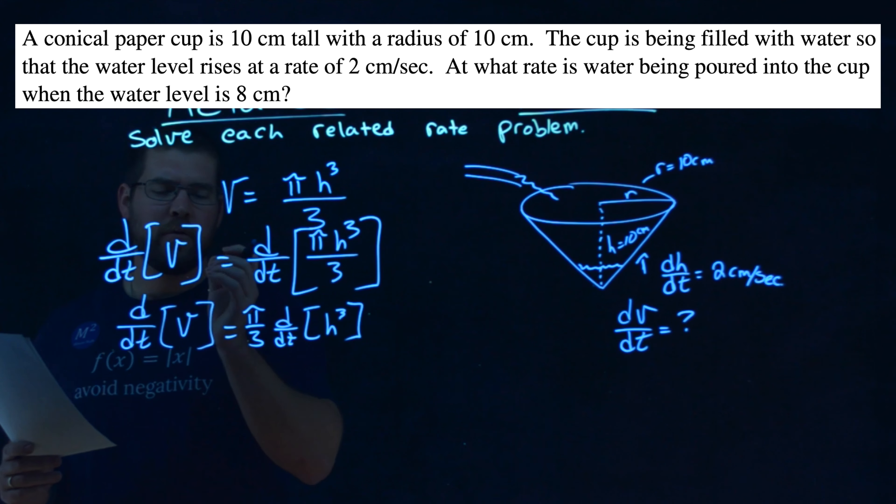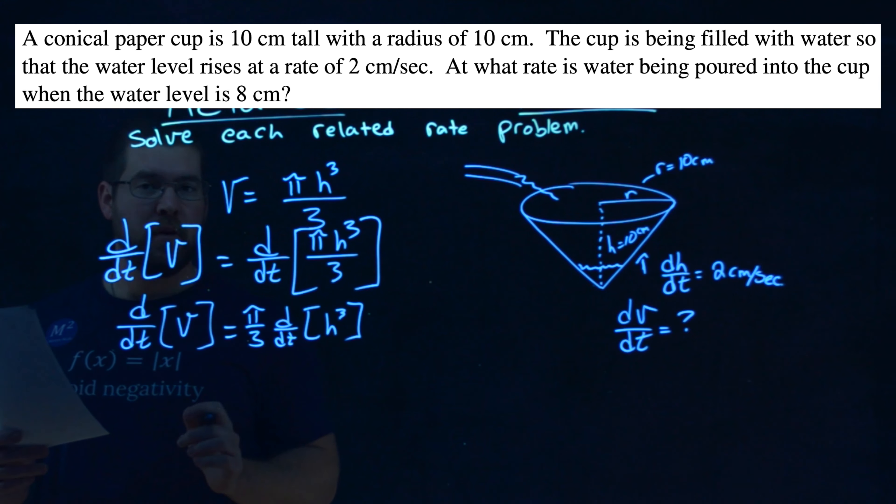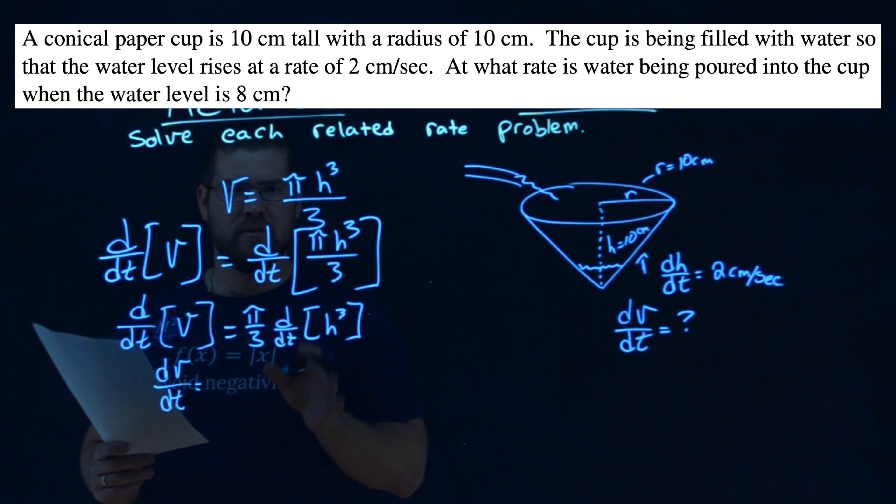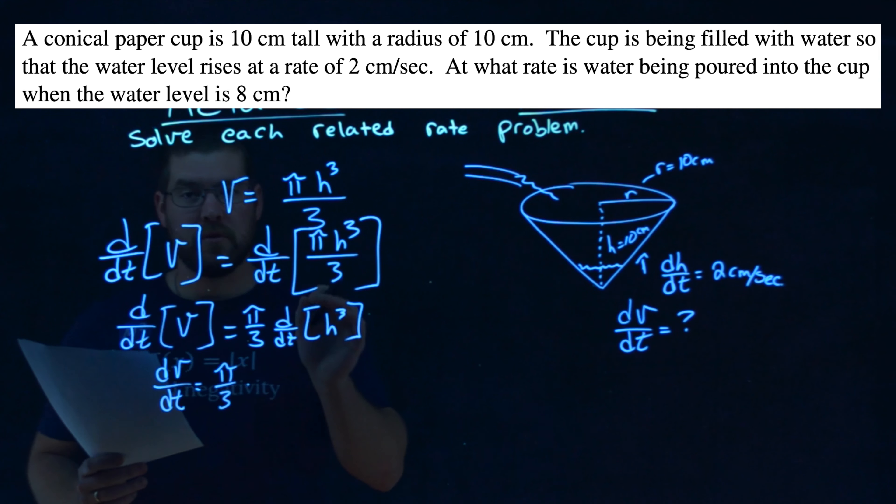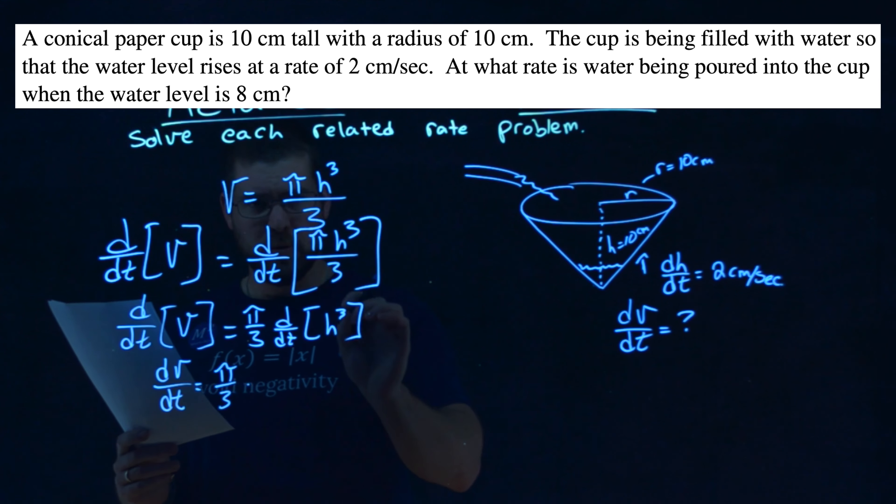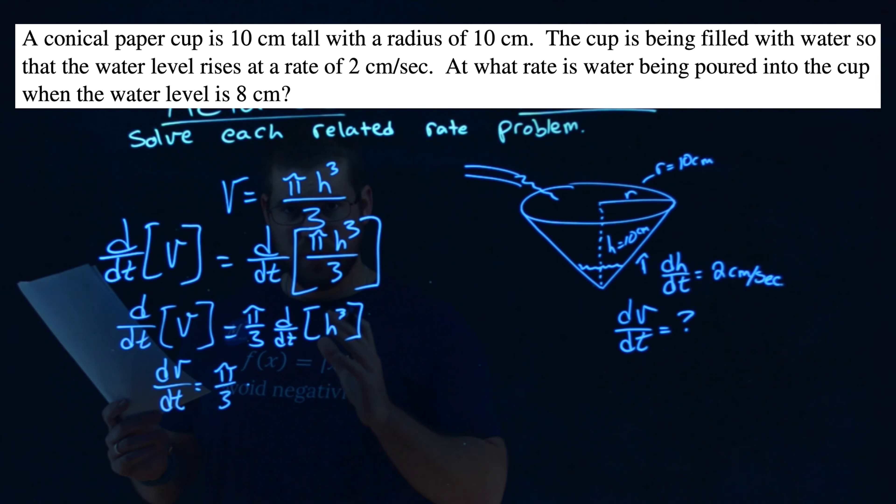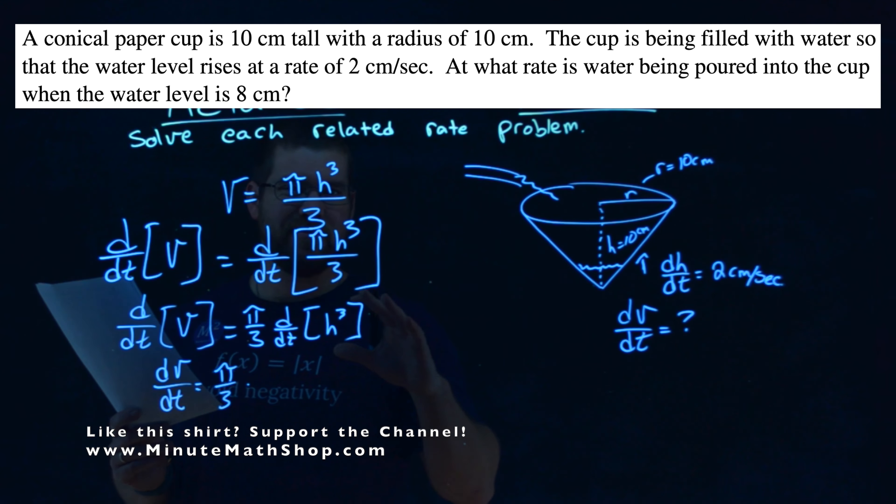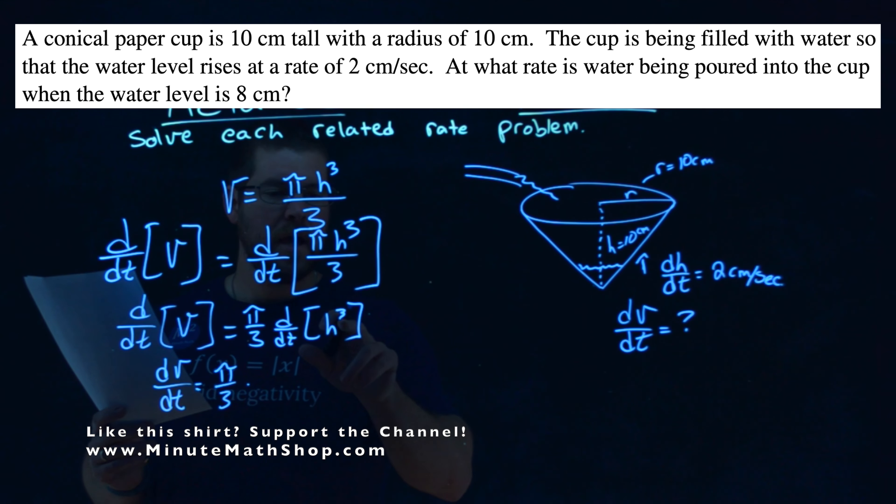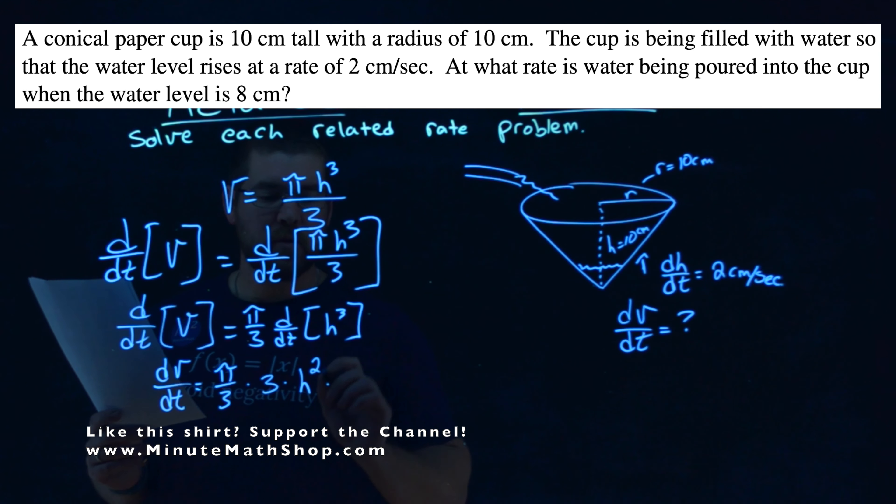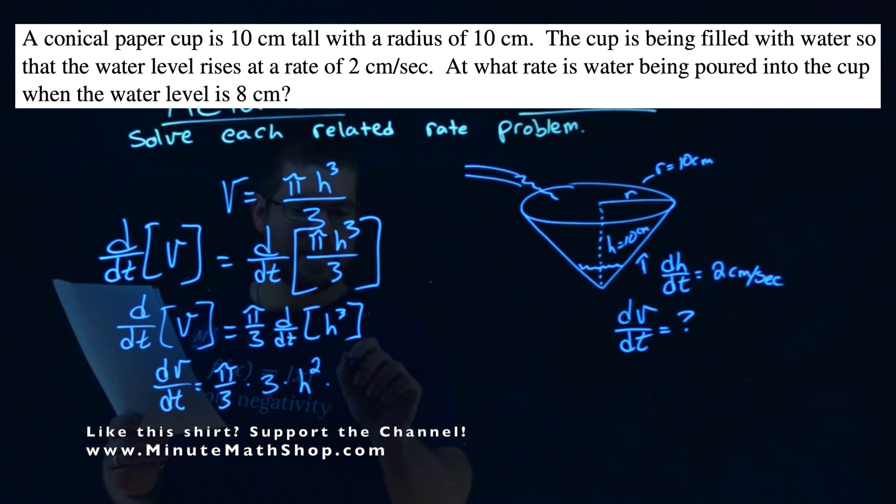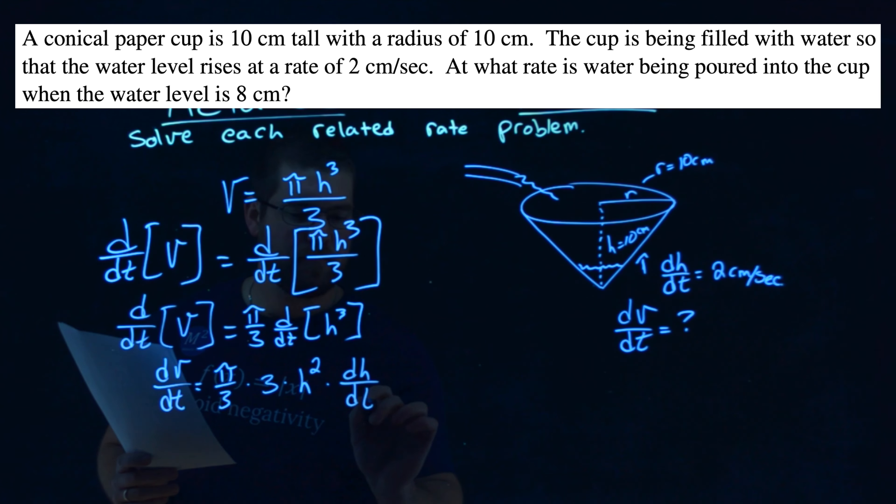Now, the derivative with respect to time of the volume is just that dv dt. And look, that's something we're looking for our answer. So we're on the right track here. Pi over 3, going to stay out front. And let's derive here, height cubed with respect to time. Now, power rule, chain rule, kind of going on here. Remember, h is a function of time here, or it's going to be. 3 comes out front. Power rule, h stays the same. Subtract the x minus 1, we have h squared. Multiply that by the derivative of h with respect to time, is that dh dt.